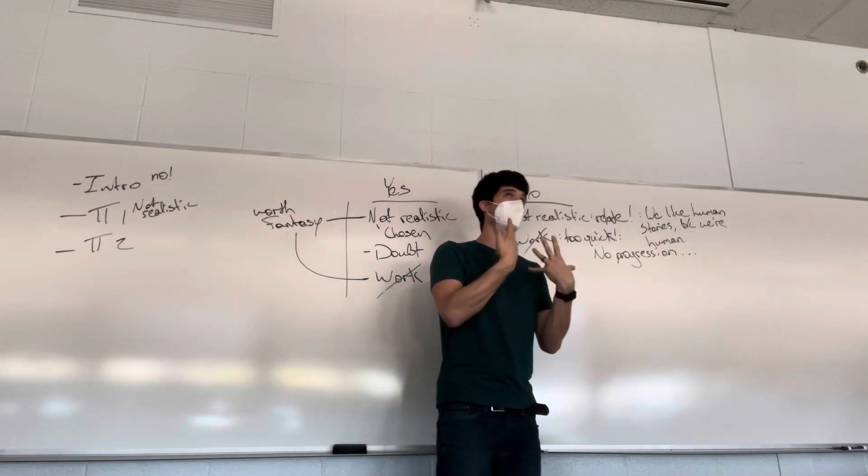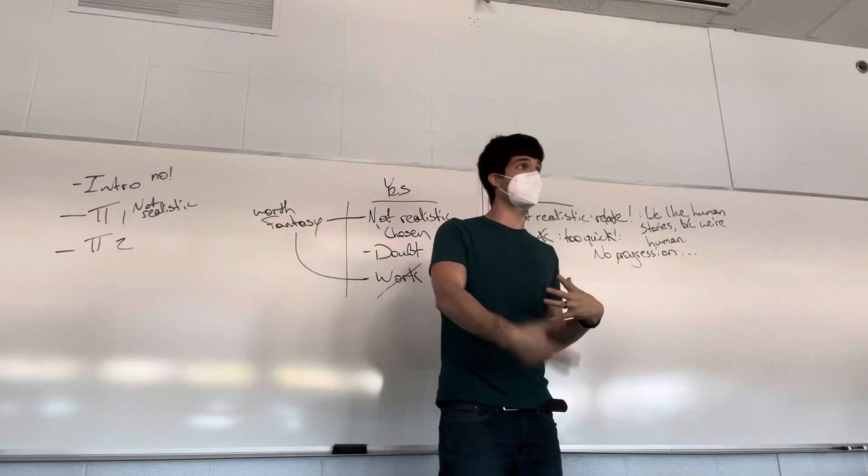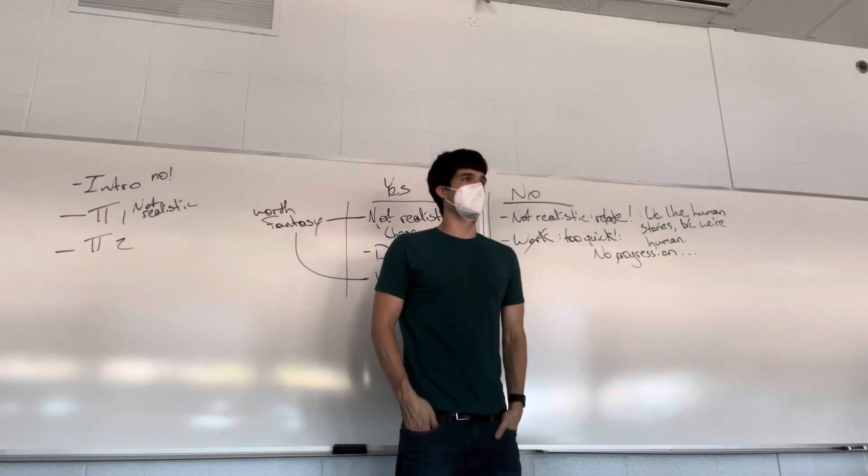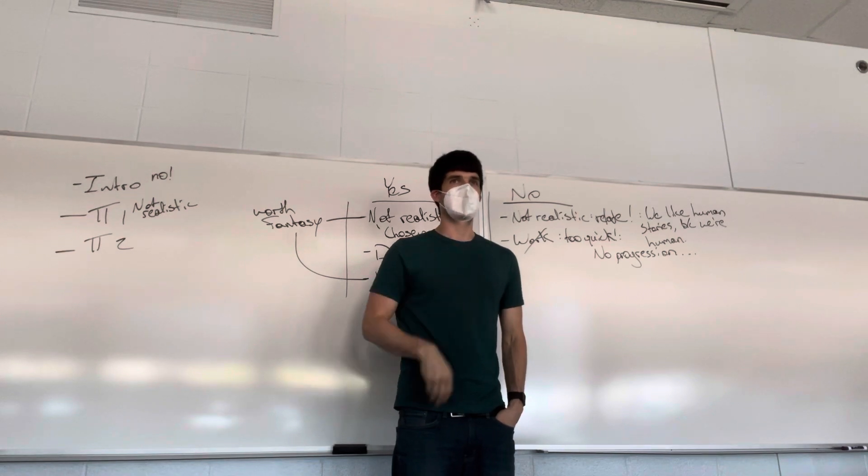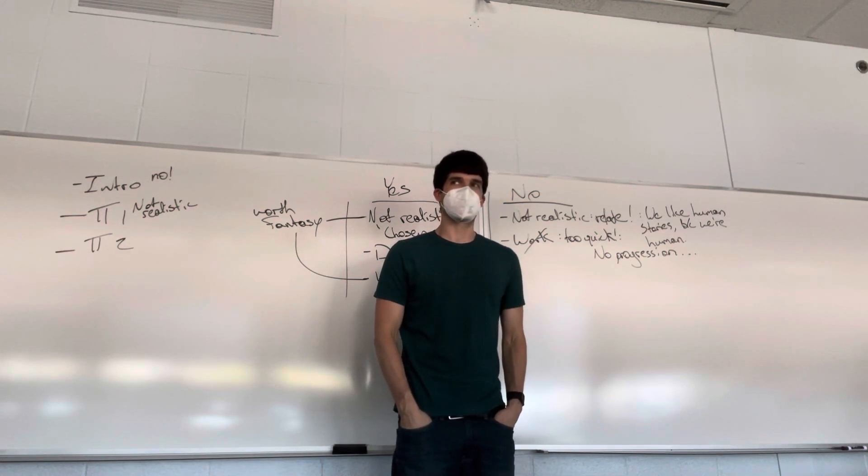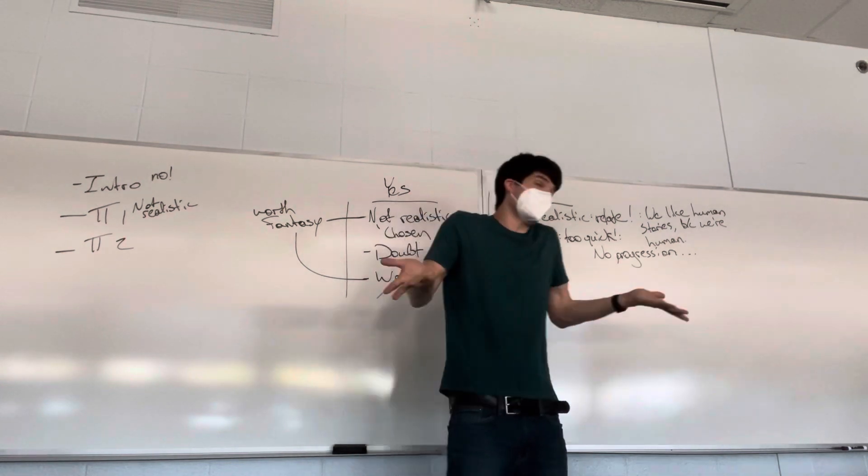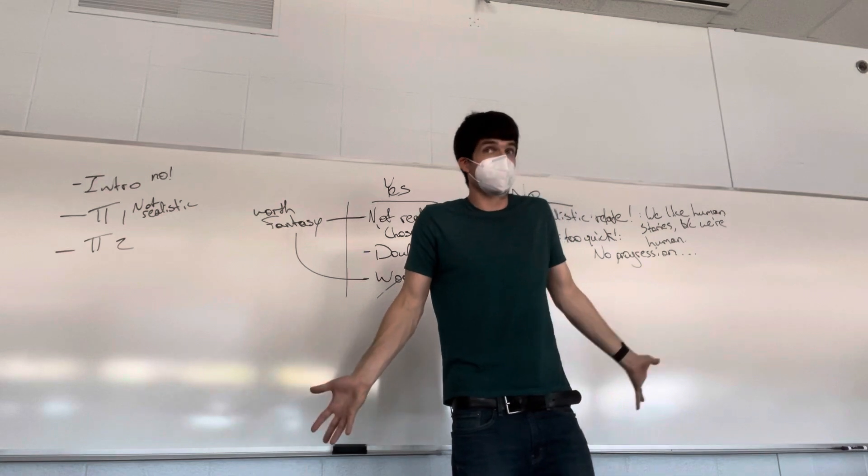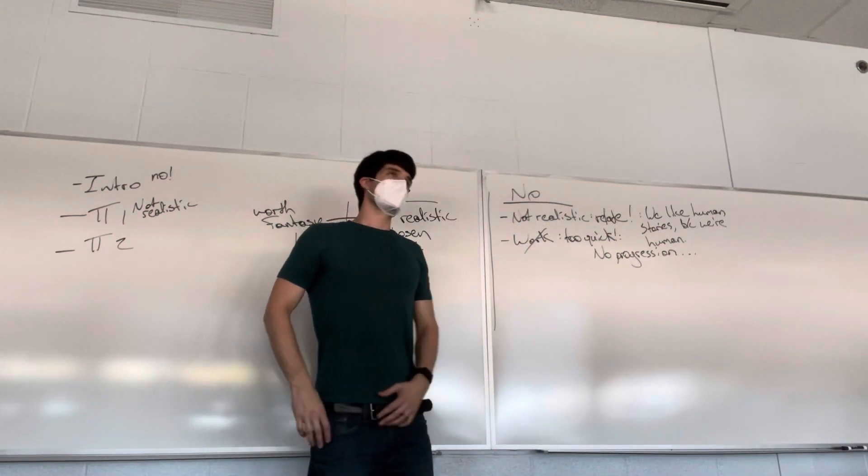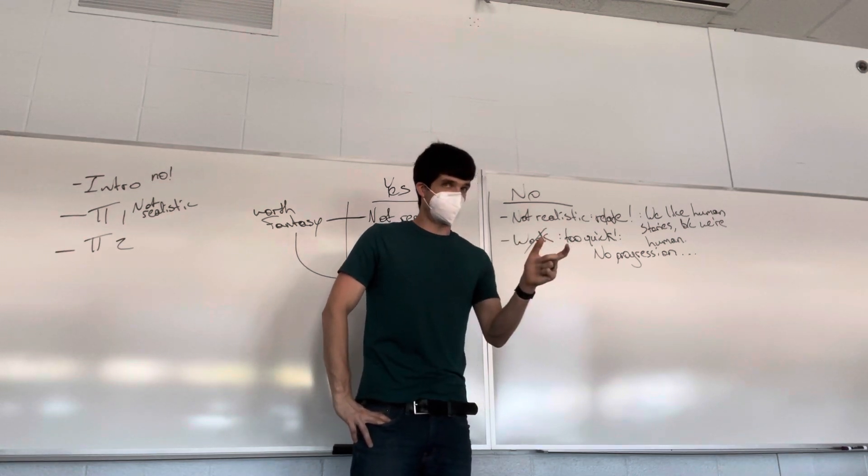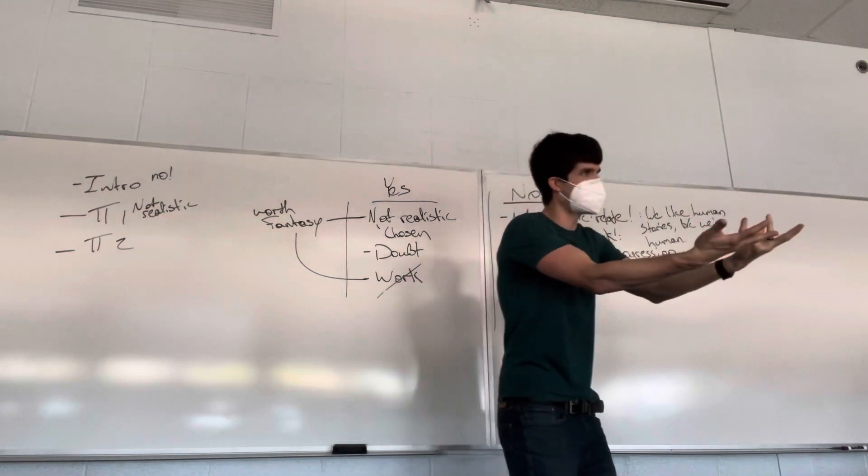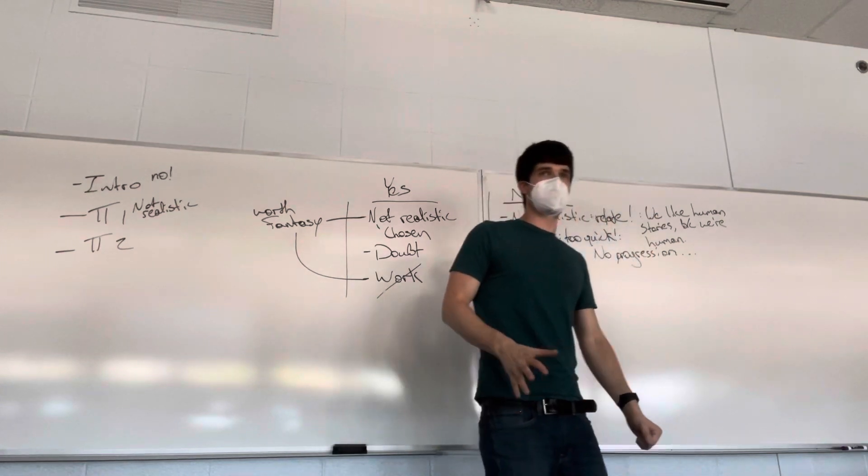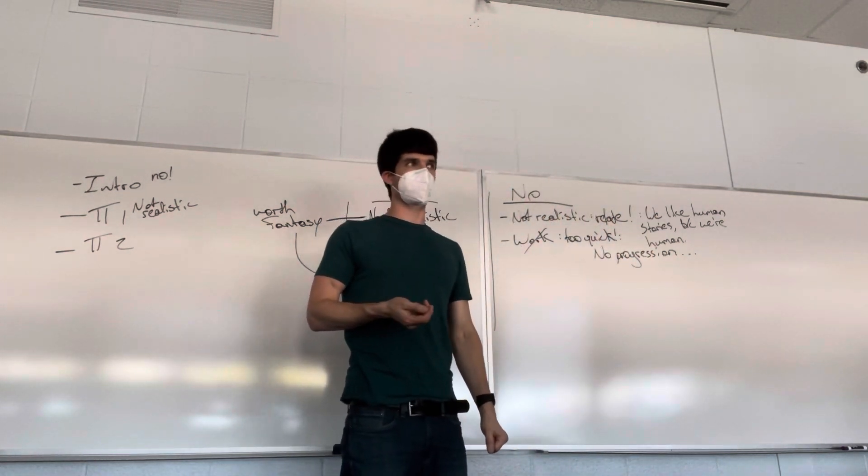But even in a movie like The Matrix, there can be believable elements. For instance when that guy betrays everybody, you're like 'yeah, I knew that guy was a snake.' He's so creepy. The whole time he's talking to Trinity and he's literally in her face and she can't do anything - I went to high school with guys like that. Creepy bastards. Unfortunately that feels realistic. That's one of the most realistic parts of the movie, when he's creeping on her. So it is possible.